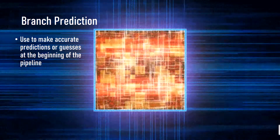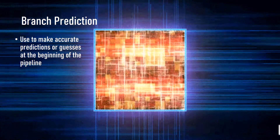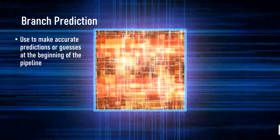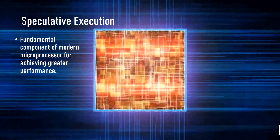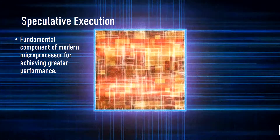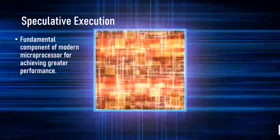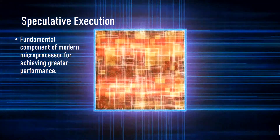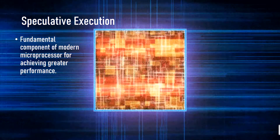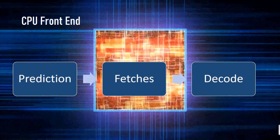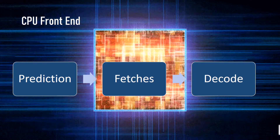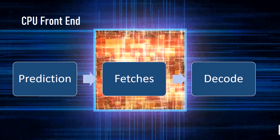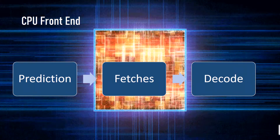Speculation is the term used where a computer system performs some tasks that may not be needed. Branch prediction is used to make accurate predictions or guesses at the beginning of the pipeline. Speculative execution is used for achieving greater performance.